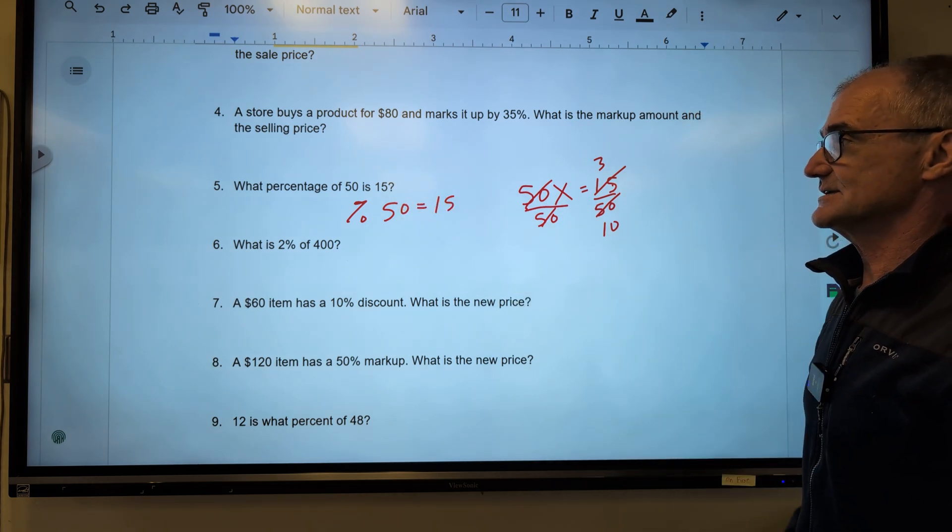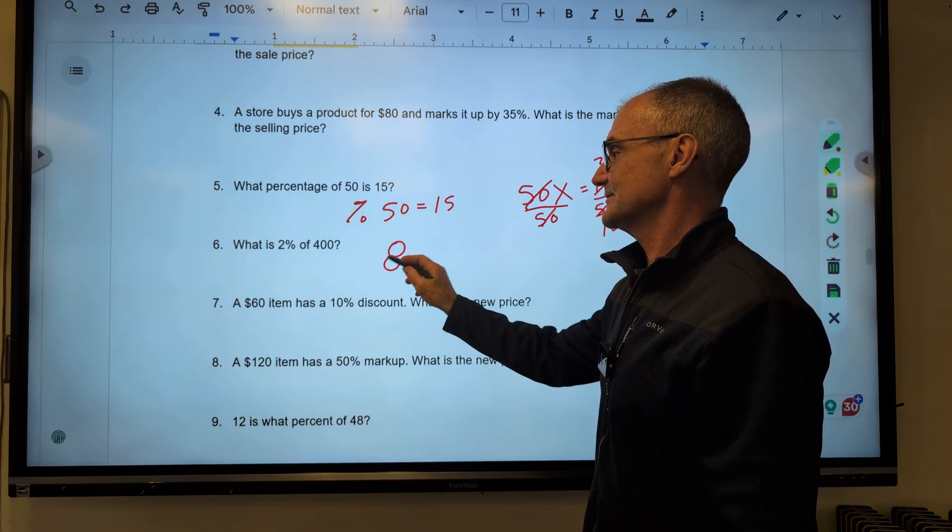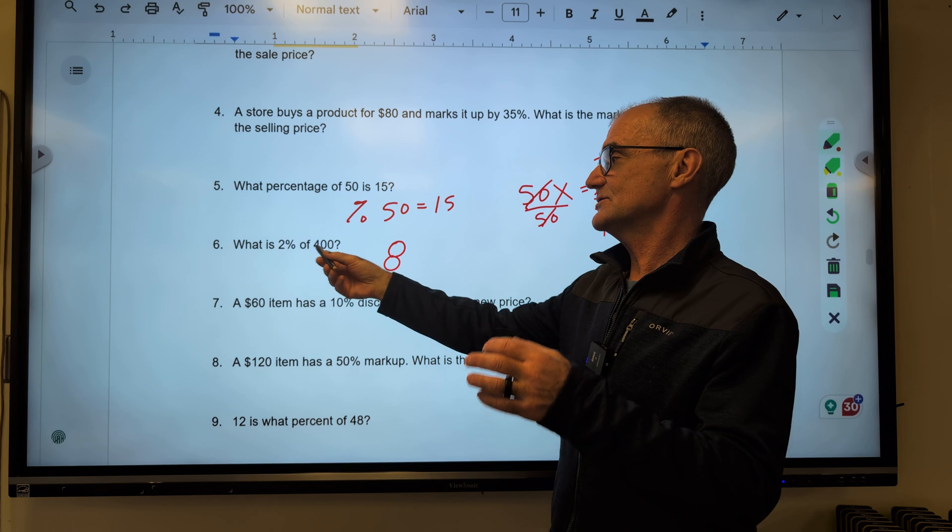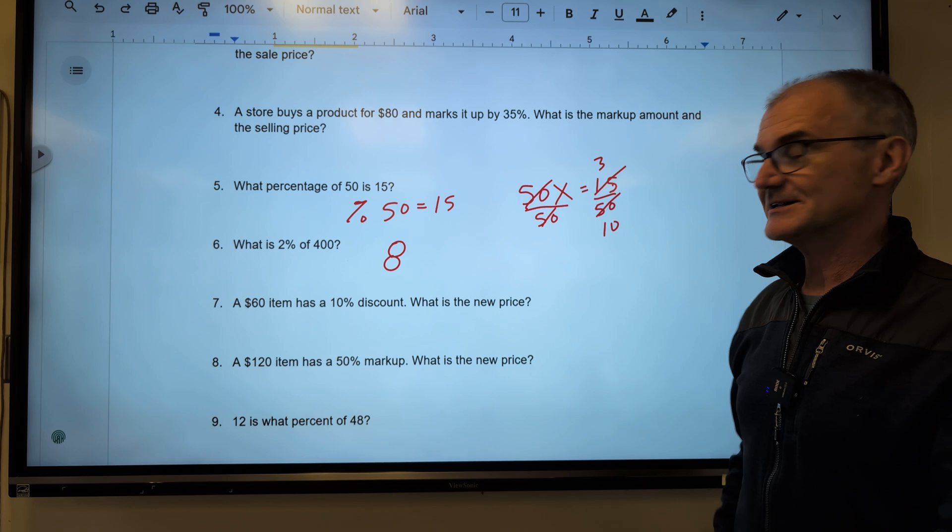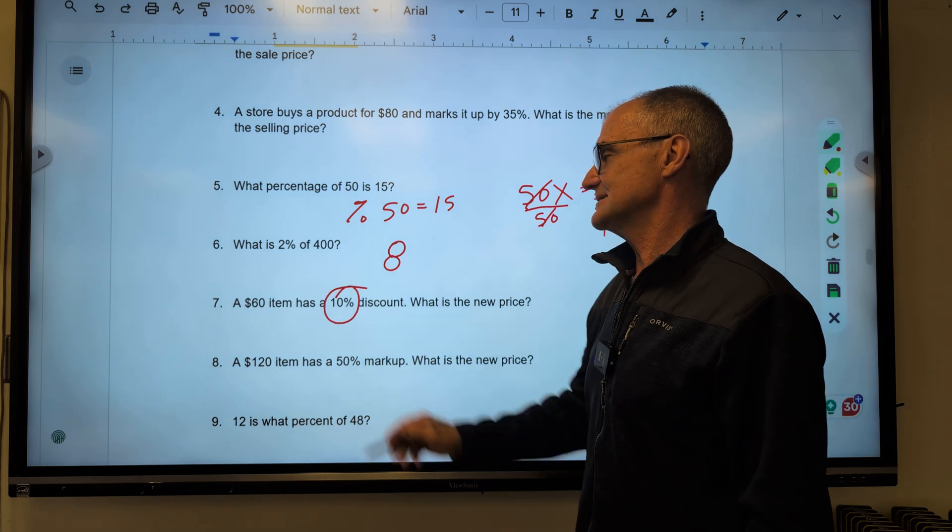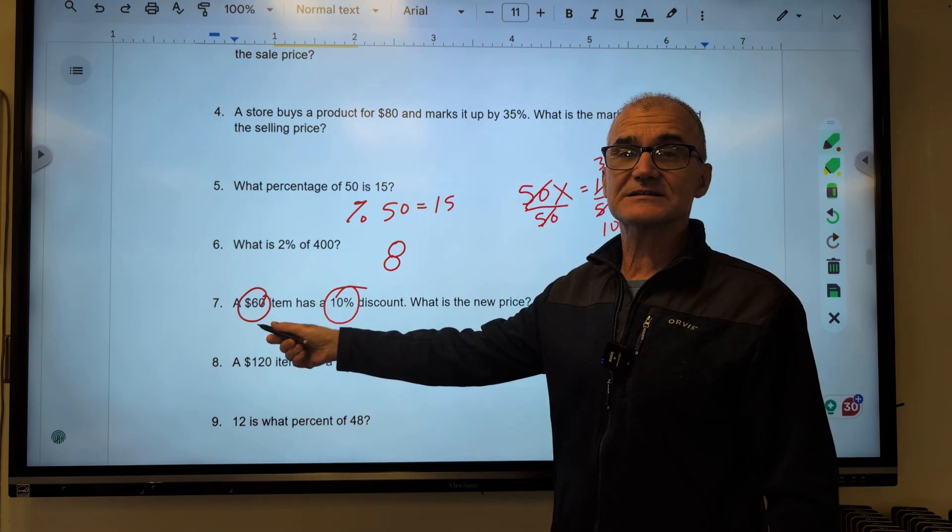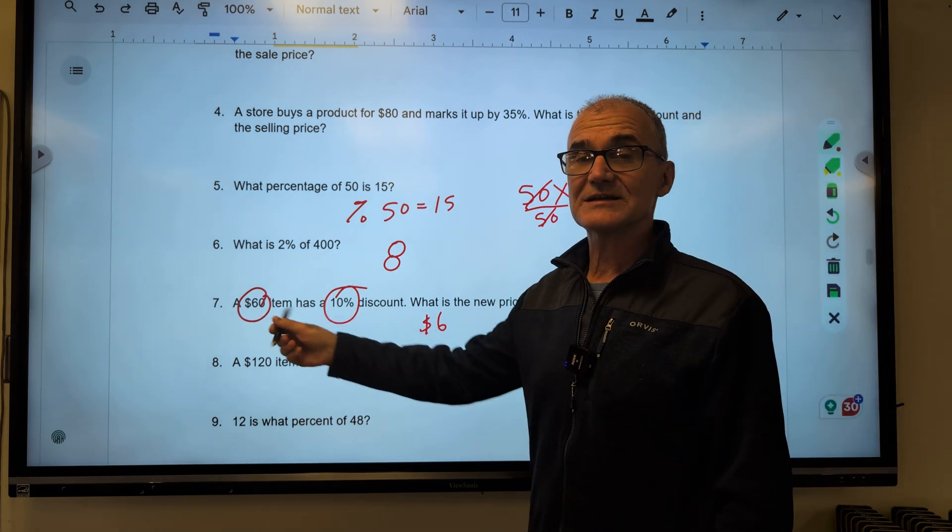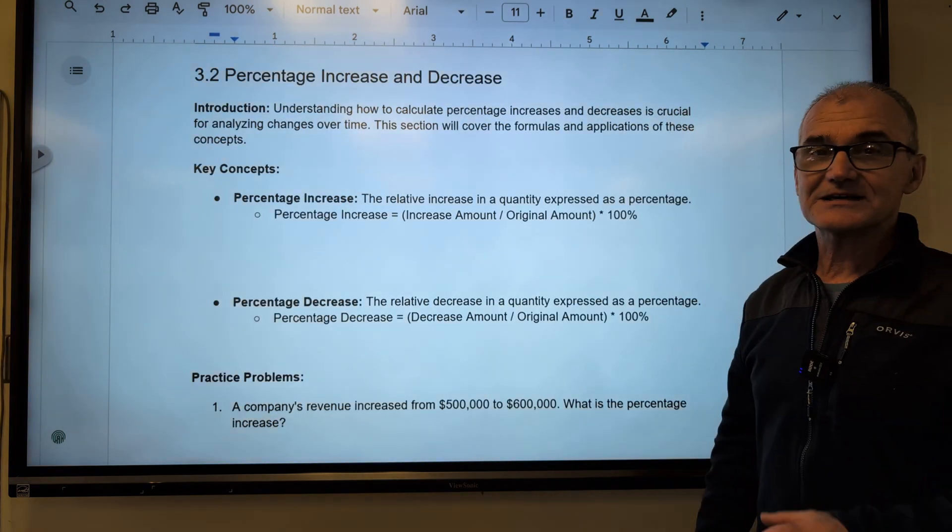What is 2% of 400? Well, I know 2 times 4 is going to give me 8. Is that going to be the right amount? Let's think about that. 10% of 400 is 40. So 2% should be a fifth of that, or 8. Let me do one last one, and you could always go to the book and get more problems if you want. A $60 item has a 10% discount. What is the new price? So first I have to start with 60 bucks. 10% of 60 is $6 off. So my discount amount is 6. What is the new price? 6 from that 60. The new price is $54.